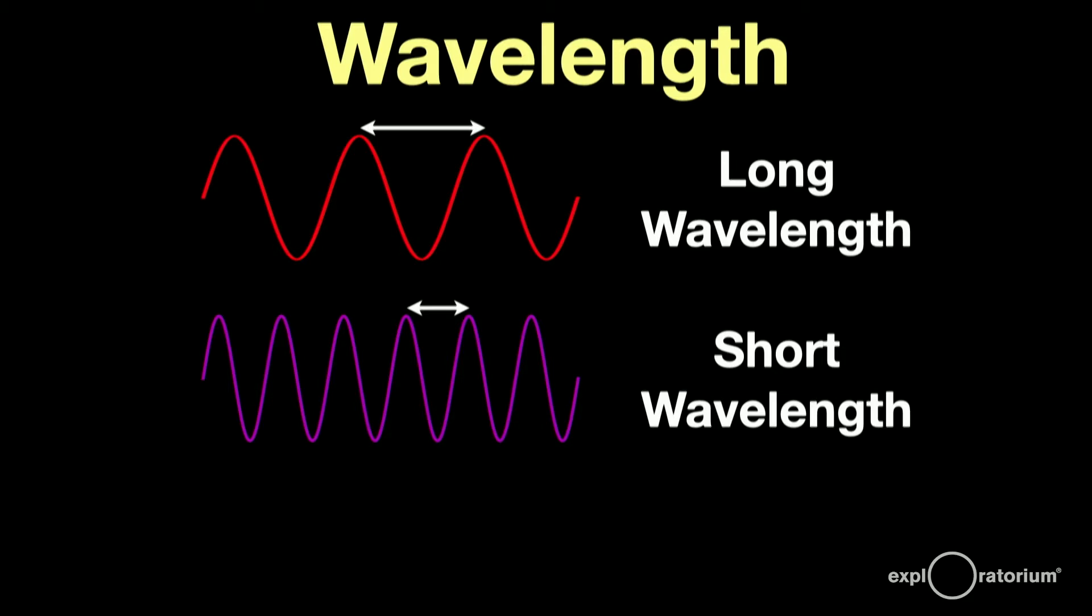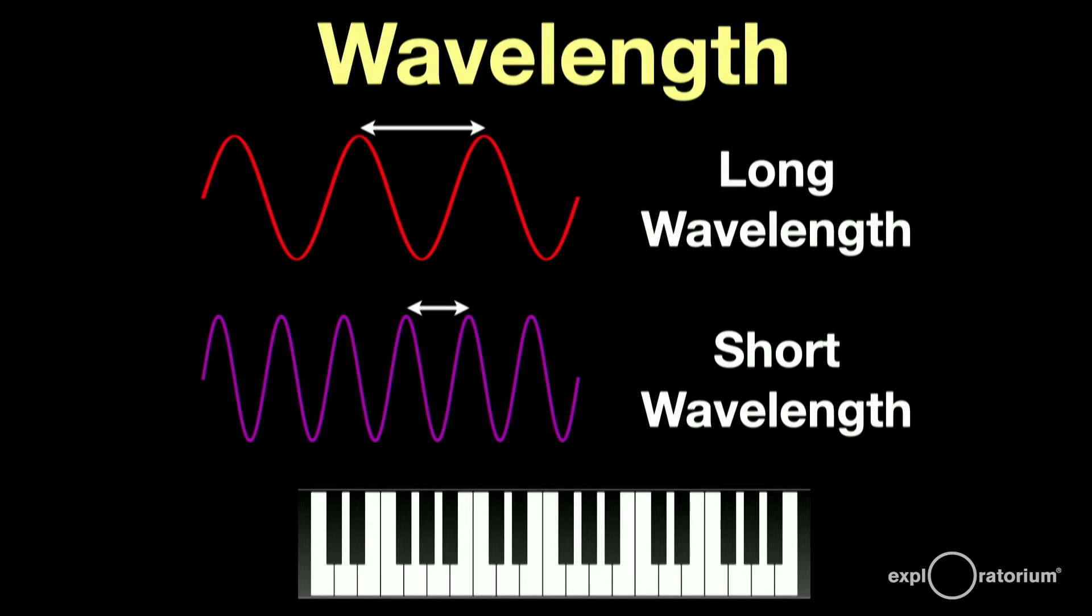Here, you see the red wave has twice the wavelength of the violet wave. If we played these two waves on a piano, the red wave might sound like this, and the violet wave would sound like this, an octave apart.